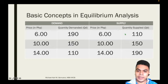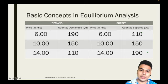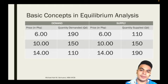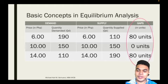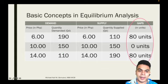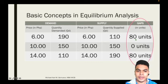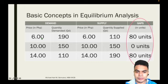These are the opposing forces. But if you notice, there would be a point where demand and supply will meet. So if we try to compute the gaps — gaps mean the units where they do not meet. For example, at 6 pesos price, quantity demanded is 190 and quantity supplied is 110, so there is a gap of 80 units.